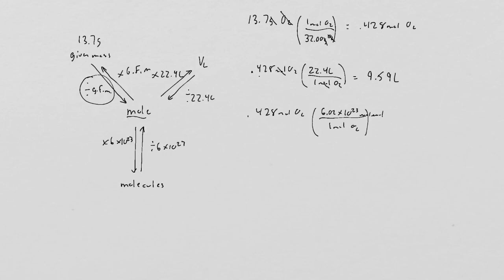And so I go, I literally take this 0.428, 0.428 times 6.022, and I get 2.57 times 10 to the 23rd molecules of O2.